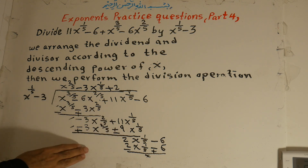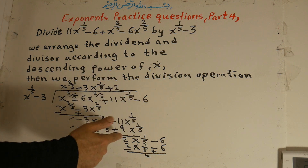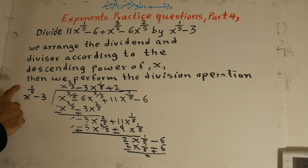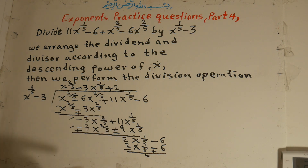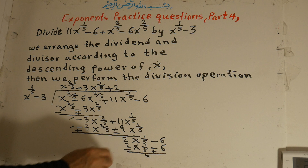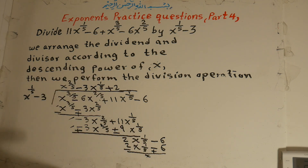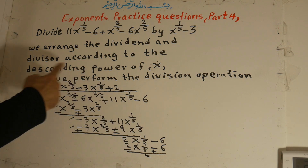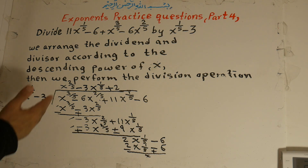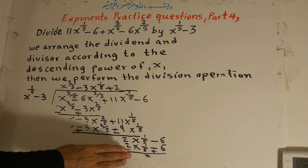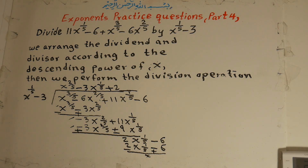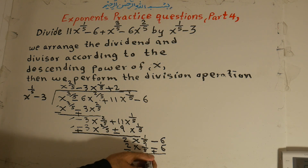Now these two cancel with each other and 11 minus 9 is 2x to the power of 1 over 5 minus 6. 2 divided by 2 is 2, x to the power of 1 over 5, giving quotient term plus 2. 2 times x to the power of 1 over 5 is positive, 2 times negative 3 gives negative 6. These two cancel with each other. The quotient or result is x to the power of 2 over 5 minus 3x to the power of 1 over 5 plus 2, and the remainder is 0.